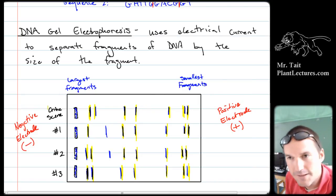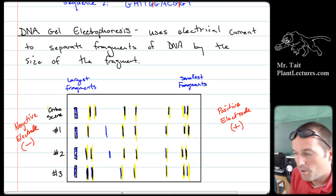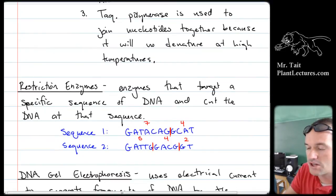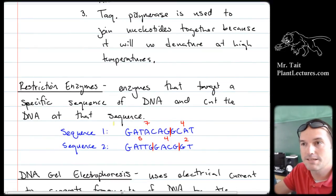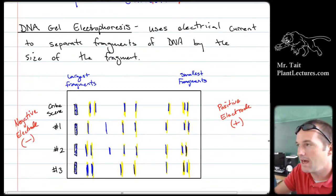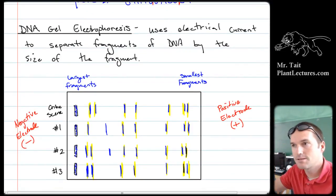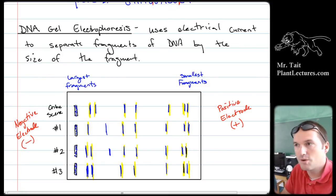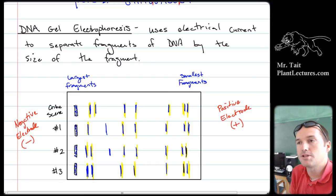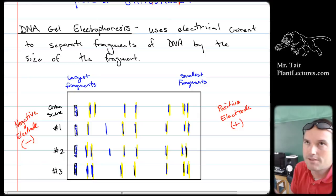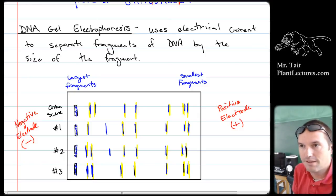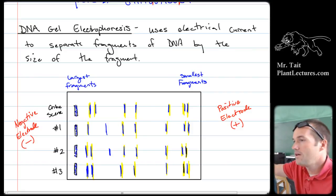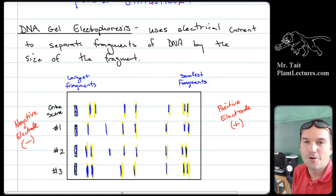Is that one test enough to convict somebody? No. You go back and use a different restriction enzyme that cuts at different points, run that gel again, and they should again show the same patterns. You repeat this multiple times until you have about 99% certainty that the DNA came from the same place — except in cases like identical twins or clones who actually share the same DNA sequences.